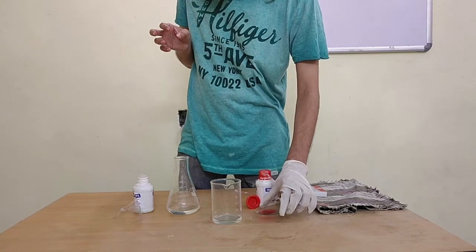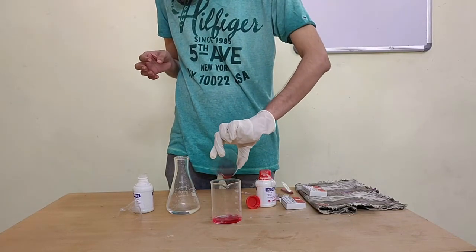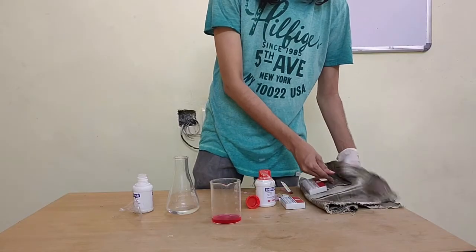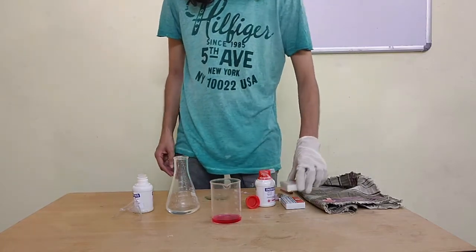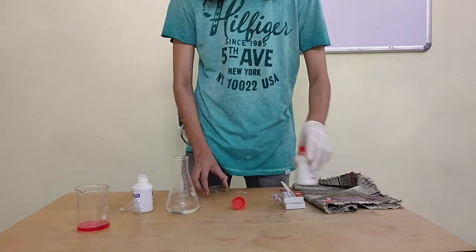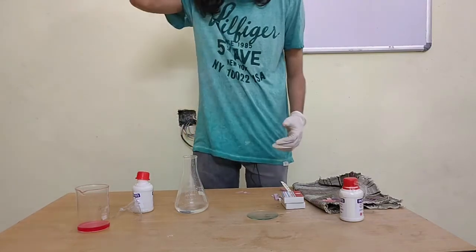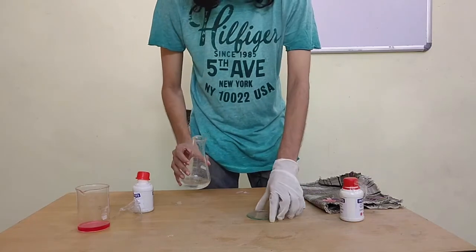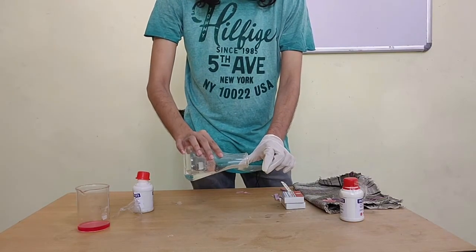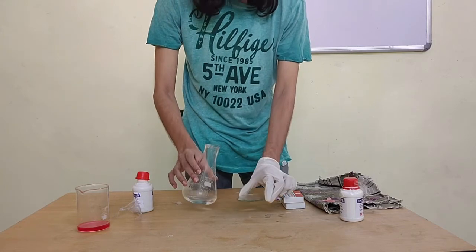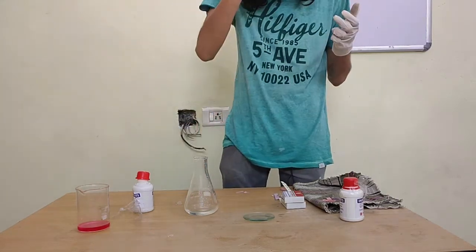That's the end of the acid section. Now we'll proceed to the base. For a base, litmus paper does the exact opposite. With an acid, blue litmus turns red; with a base, red litmus should turn blue. One simple way to remember: acid is a strong, scary word — blue to red, getting angry, like an acid. That's how I remember it.